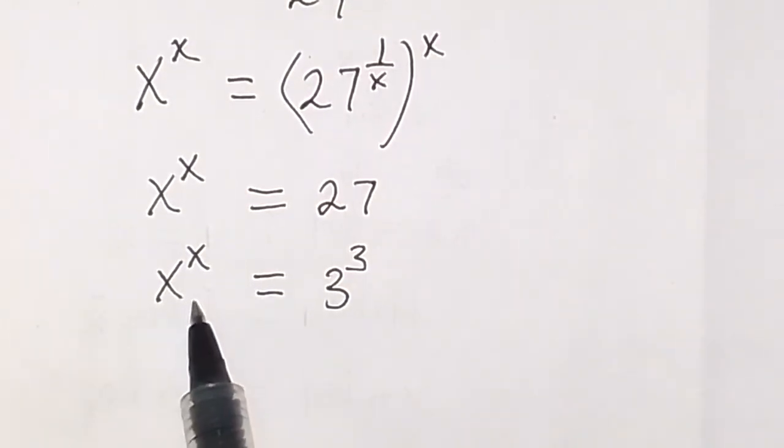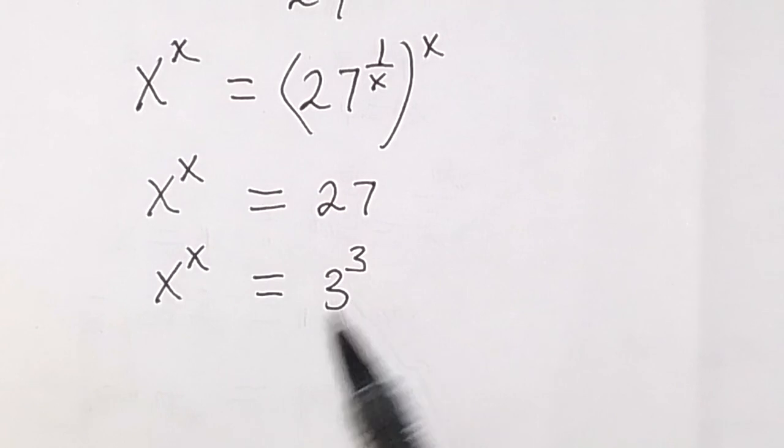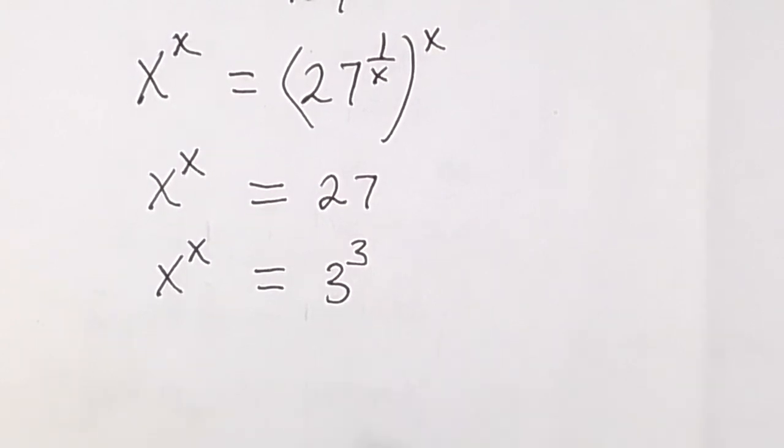raised to the same number, the number raised to the same number. So clearly from here now we can see that x will be equal to 3, x will be equal to 3, and that is the solution here.